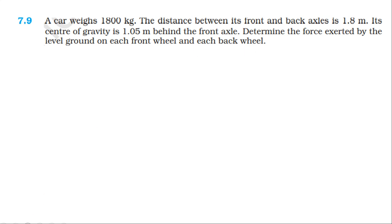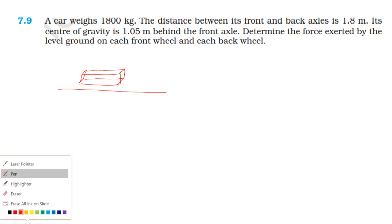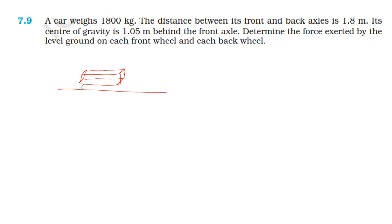If you have a car, the front wheel and back wheel — there are 4 wheels. On a level ground, the distance between the back wheel and the front wheel is 1.8 meter.